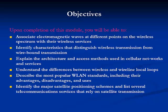Upon completion of this module, you will be able to first associate electromagnetic waves at different points on the wireless spectrum with their wireless services. Then you'll be able to identify the characteristics that distinguish wireless transmission from wire-bound transmission, explain the architecture and access methods used in cellular networks and services, understand the differences between wireless and wireline local loops, describe the most popular wireless LAN standards including their advantages, disadvantages, and usage, and finally explain the major satellite positioning schemes and list several telecommunications services that rely on satellite transmission.